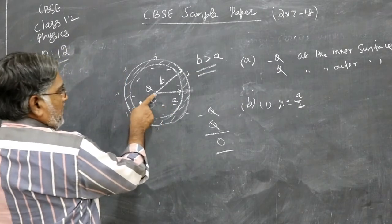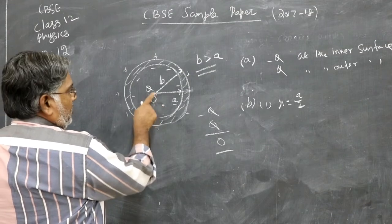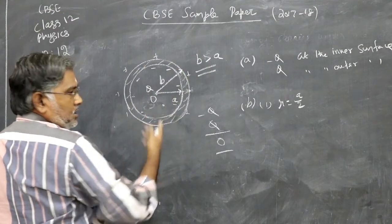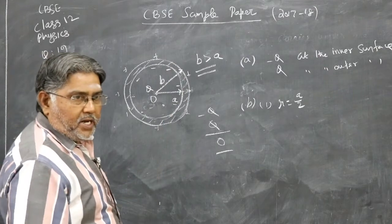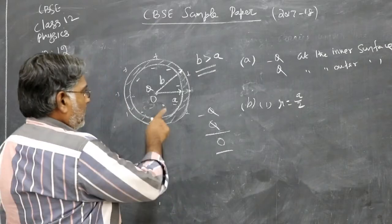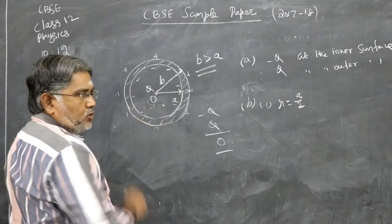So you have kept a charge plus Q. So electric field will be due to this. Inside the shell, there won't be any electric field due to the shell. So electric field will be only due to the charge which you place at the center.